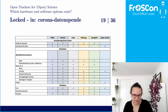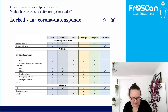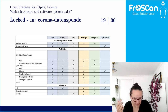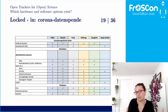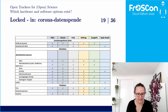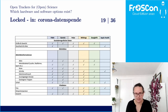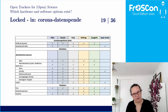It's about intent. Same for the corona-datenspende: they collect compounds — steps taken, calories burned, flights of stairs — which are approximations of activity that you can't fully validate. But the idea is: if there's a signal, you will find it.